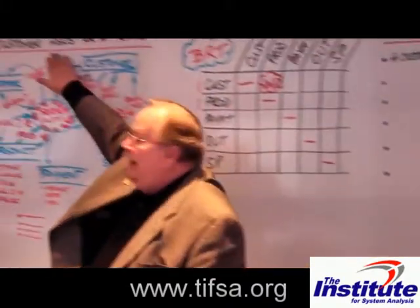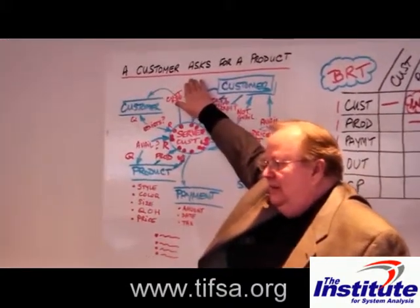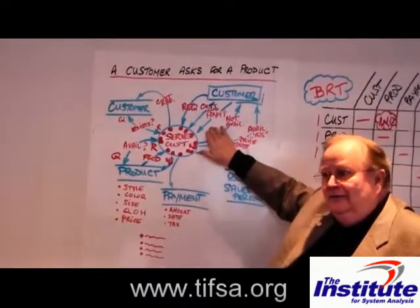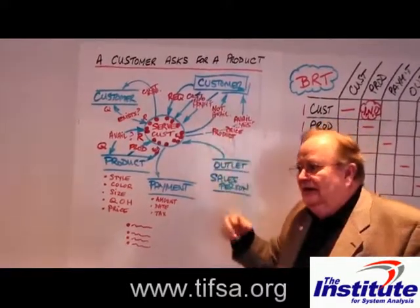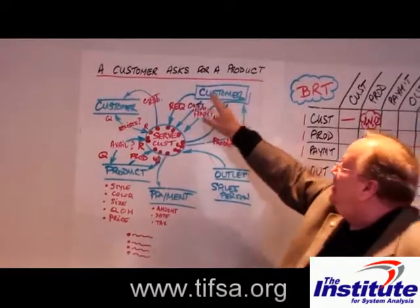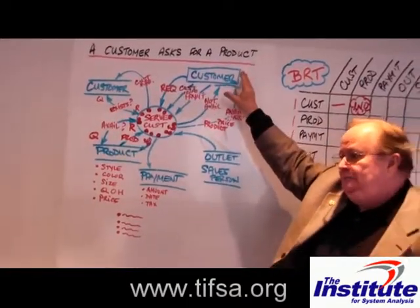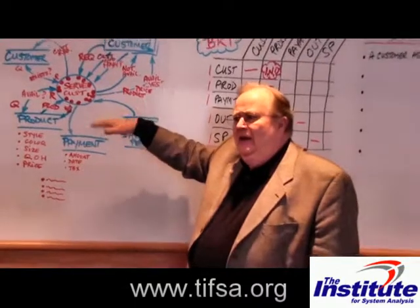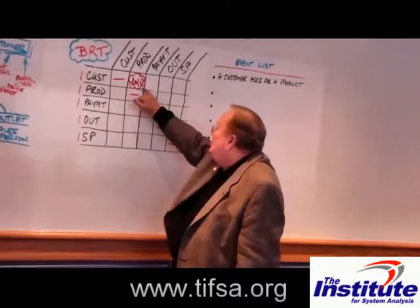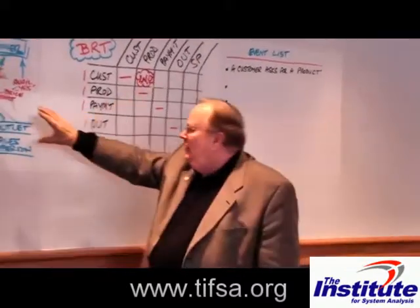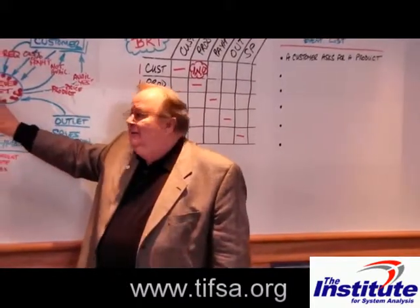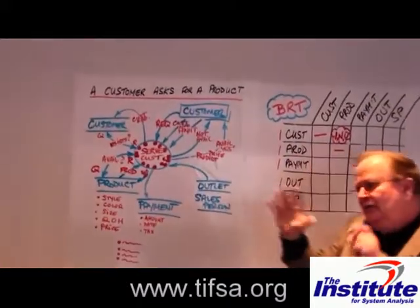A customer asks for a product, and they either get it or they don't — it covers off both sides. I could have said 'a customer wants to buy a product,' and then the other event would be 'a customer does not buy a product.' But we've really covered that off already, so we don't have to do anything with it, because stating it as 'a customer asks for a product' covers both sides.